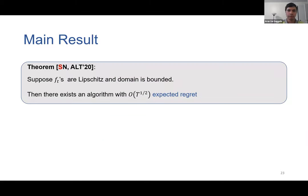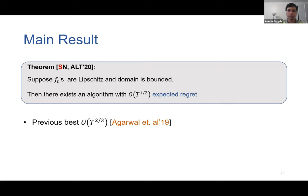Our main result: suppose the sequence of loss functions ft's seen by the learner are Lipschitz and could be non-convex, and suppose we have access to a certain offline optimization oracle. In this setting, we can show a regret rate of square root T, which is tight even in the convex setting. The recent result of Agarwal et al. was the first in this setting, but they achieve a regret of T to the two-thirds, which is highly suboptimal. We show this can be improved to the optimal square root T regret.